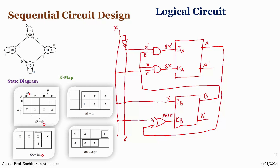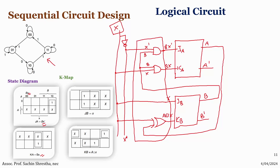This is the final sequential circuit designed for the given state diagram. X is our input, the AND gates and XNOR gate form the combinational circuit, and the two JK flip-flops fulfill our state requirements. That's how we can design a sequential circuit for the given state diagram. I hope this will be helpful for you in solving questions in your exams. Thank you.